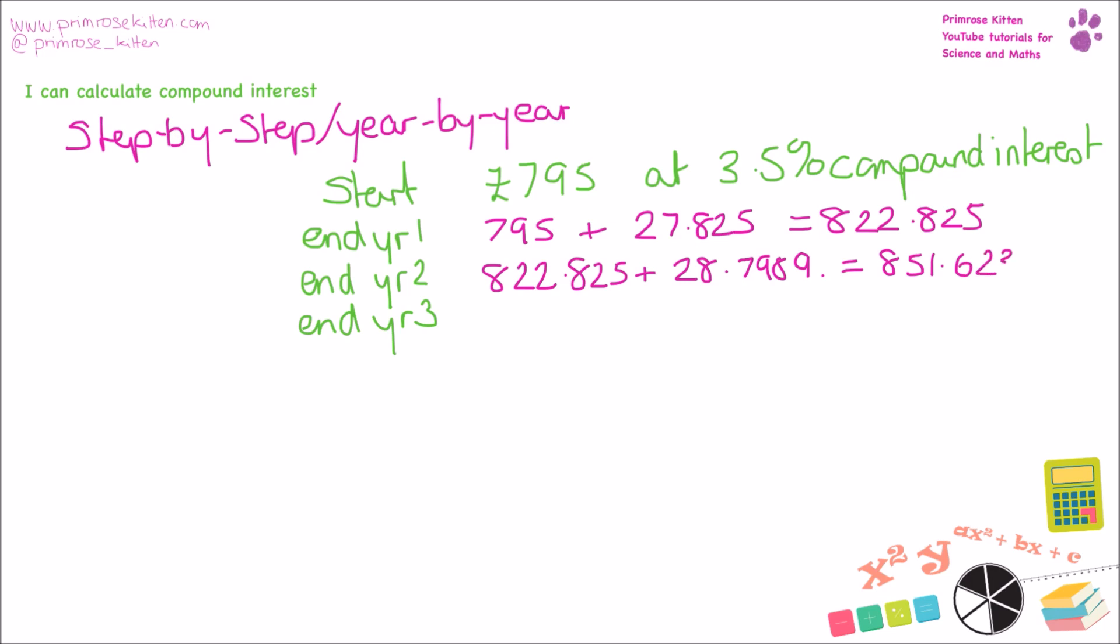But don't round them too short, otherwise you're going to get a rounding error, which is going to end up in you having the wrong answer. So either write your entire number down from the calculator, or store it in your calculator memory. So after three years, we're going to have £881.43.